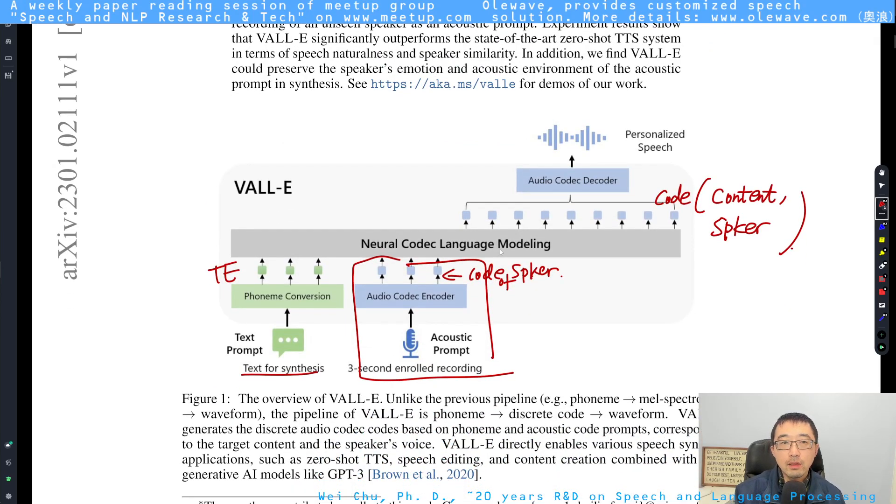And then let's look at the general framework of the proposed method, VALL-E. First, they start off with a pre-trained model, which is Neural Codec Language Modeling, which will generate code. The code would contain two pieces of information: content and speaker. The content is coming from the text for synthesis, and the speaker information is coming from the acoustic prompt, which is three seconds of enrolled recording.